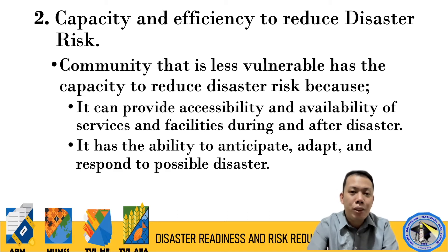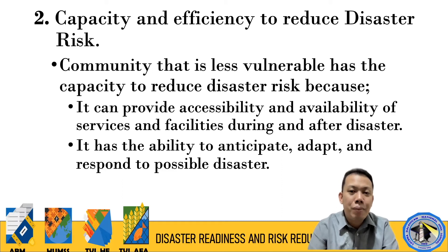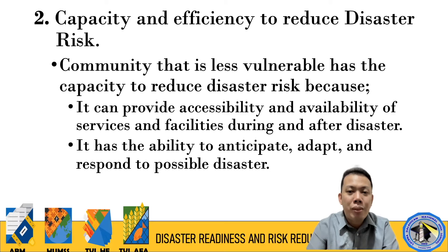When a natural hazard strikes, is the community ready? Even if there is high population density in a small area, is there an evacuation area? Is there food? Are there search and rescue teams? These factors affect efficiency in reducing disaster risk. You cannot avoid a typhoon, so you must lessen your vulnerability by increasing your capacity — your ability to anticipate, adapt, and respond to possible disaster.